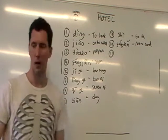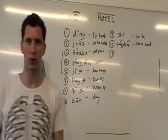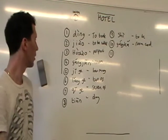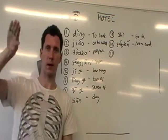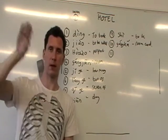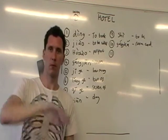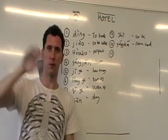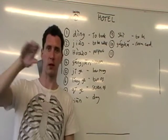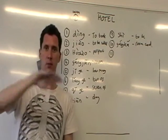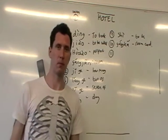Next one: 'room.' I think this word translates to 'house room.' The first part is second tone — fáng, fáng — and then first tone: jiān, jiān. So fángjiān, fángjiān — room.